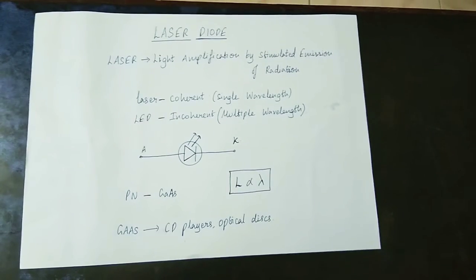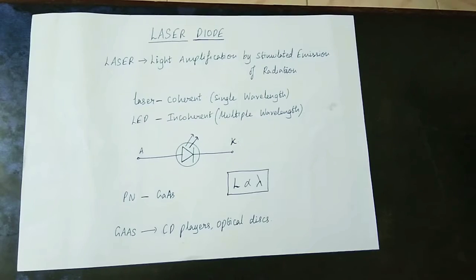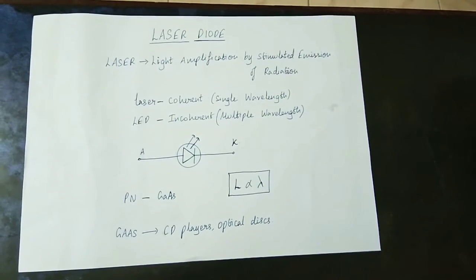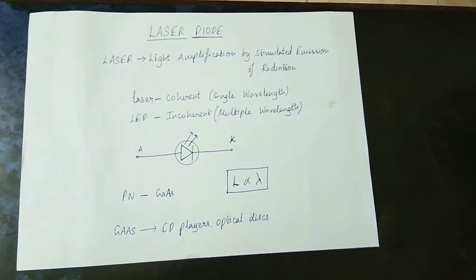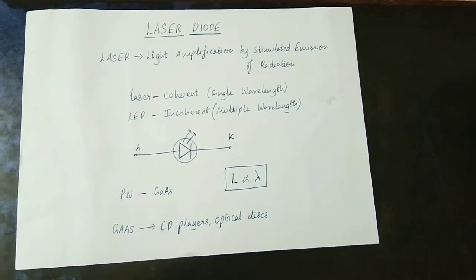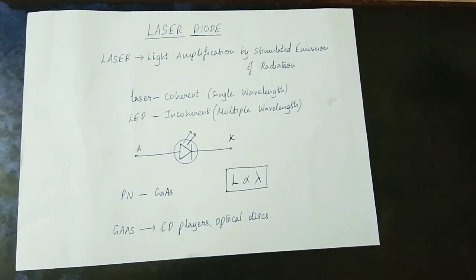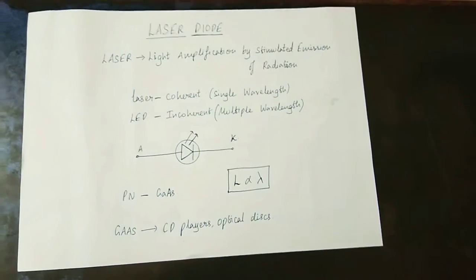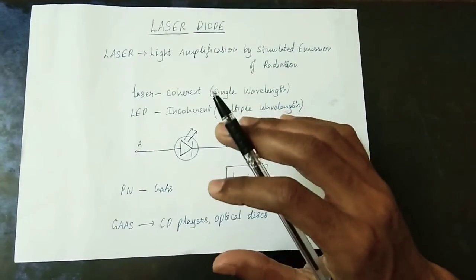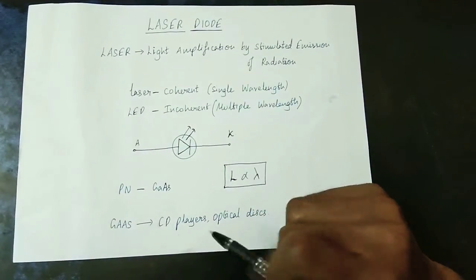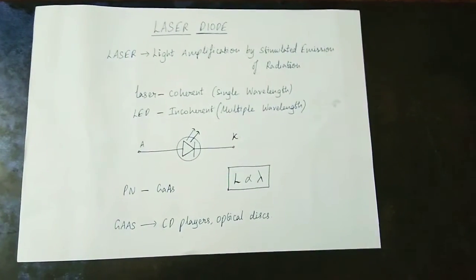A best example is CD players. If you have a sticker on a CD, it depends on the laser light. It depends on the laser diode effect. A tube light gives white color light, but the laser diode uses gallium arsenide. The laser diode is used in CD players and optical disc applications.